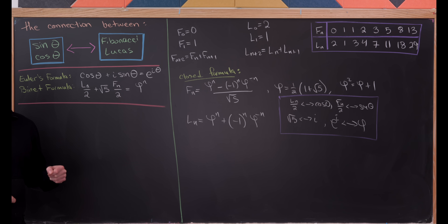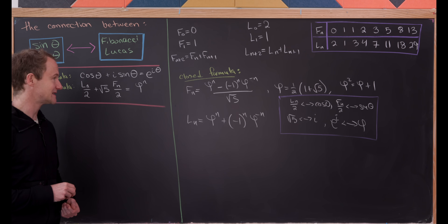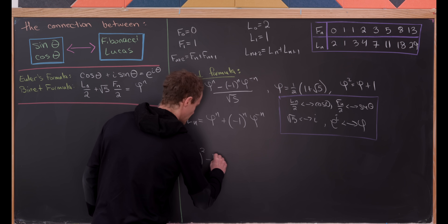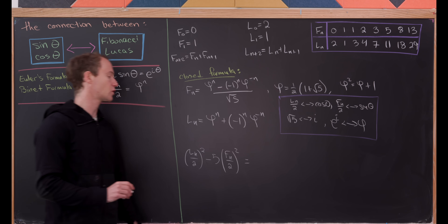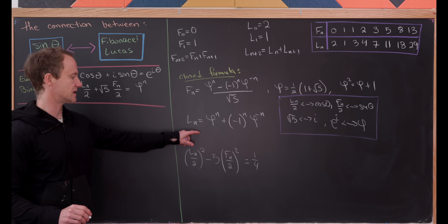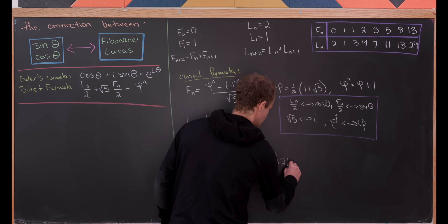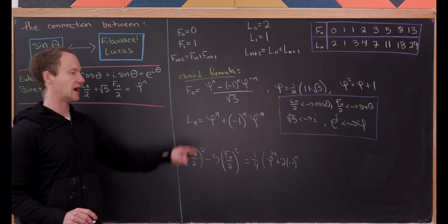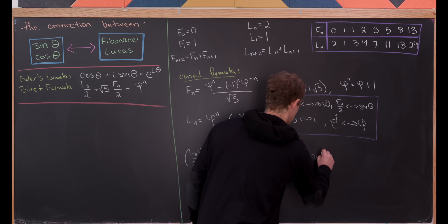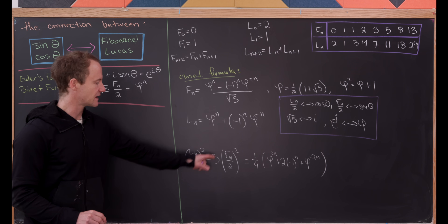Let's see if we can get something similar to the Pythagorean trig identity for Fibonacci and Lucas numbers. If we take Lₙ/2 and square it, then subtract 5 times (Fₙ/2)², we get quite a bit of simplification. We get a factor of 1/4 out front, and squaring Lₙ gives φ²ⁿ + 2(−1)ⁿ + φ⁻²ⁿ — those cross terms from squaring. Then for the Fibonacci number, the 5 cancels the √5 squared and we also get 1/4 out front.